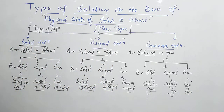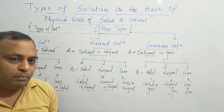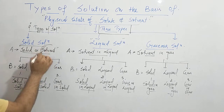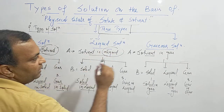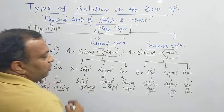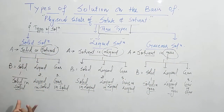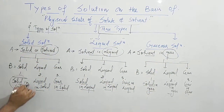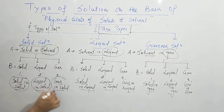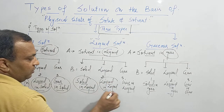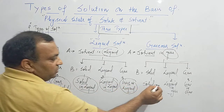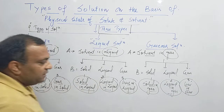So the naming is clear and the types are clear. Now we have to see examples. Before going to examples, let's briefly review: solid solution — solvent is solid; liquid solution — solvent is liquid; gaseous solution — solvent is gas. Further divided into three types each: solid-in-solid, liquid-in-solid, gas-in-solid; solid-in-liquid, liquid-in-liquid, gas-in-liquid; solid-in-gas, liquid-in-gas, and gas-in-gas.